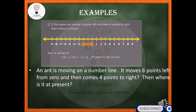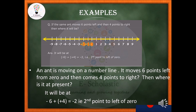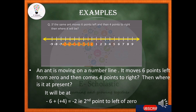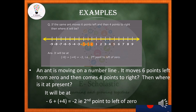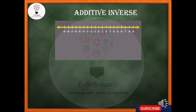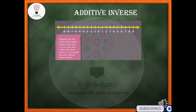One more example: the same ant moves 6 points to the left from zero, then comes 4 points to the right. It is at minus 6, and then moves plus 4. Minus 6 plus 4 gives us minus 2, so the ant is on the 2nd point to the left of zero.